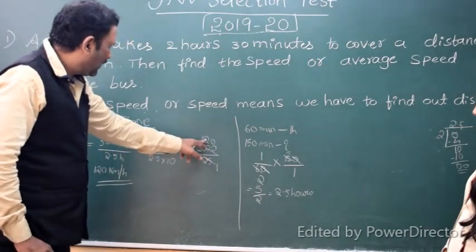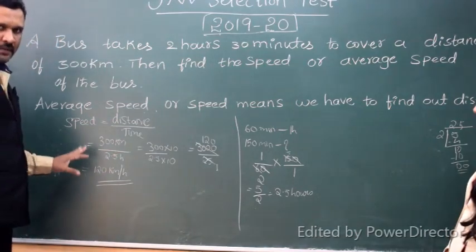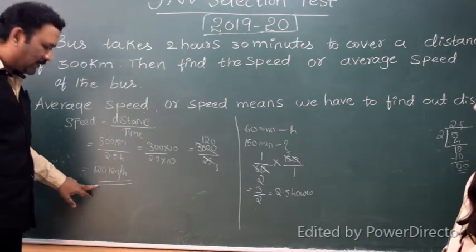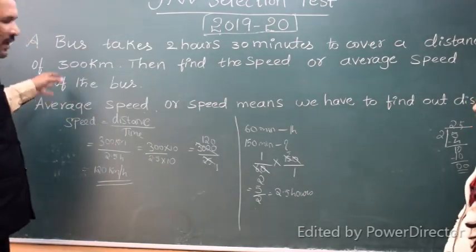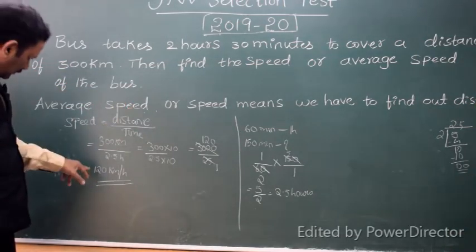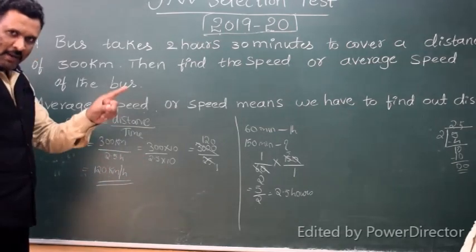So 120 is 120 km per hour. This bus is 120 km per hour. This is the answer. So this is how you can get your answer in the exam. 120, 100, 80, 300, but you can get your answer in the exam. You can tick the 120.